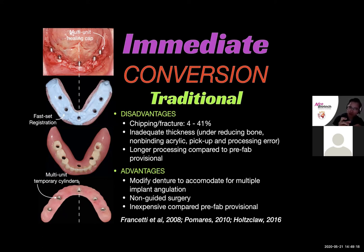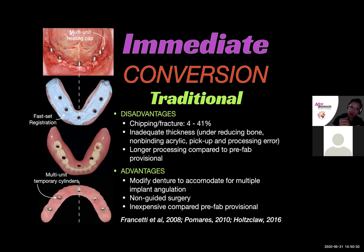There are pros and cons to traditional or analog conversion. Drilling holes through the denture acrylic and denture teeth makes it very thin and more susceptible to fracturing and chipping. Until recently, previous versions of repair denture acrylic or provisional resin did not bond very well to the denture surface. Literature reports that the fracturing rate of a full-arch provisional can range between 4 to 41 percent. By far the most common cause of fracture is inadequate thickness due to under-reducing the bone. Other causes include errors during the pickup or processing, improper occlusal adjustment, or over-extending the distal cantilever.